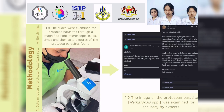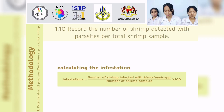Nine, the image of protozoa parasites is examined for accuracy by an expert. Ten, record the number of shrimp infected with parasite per total shrimp sample.